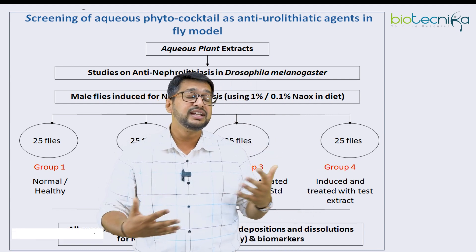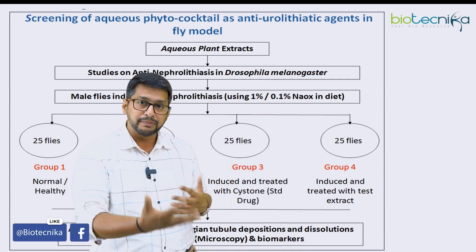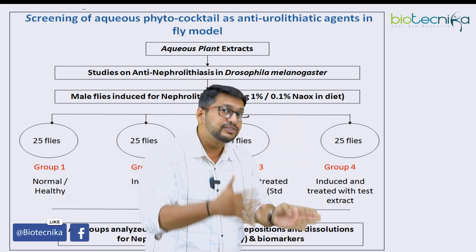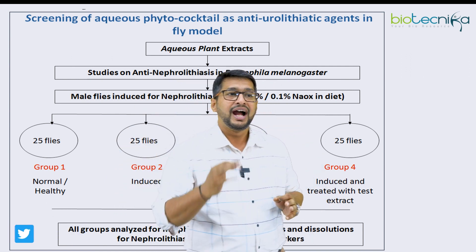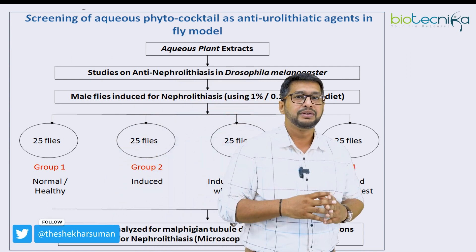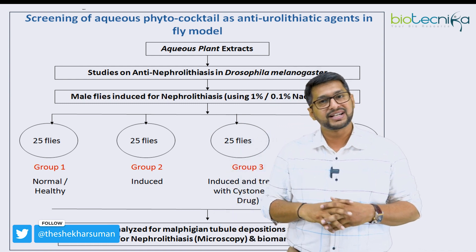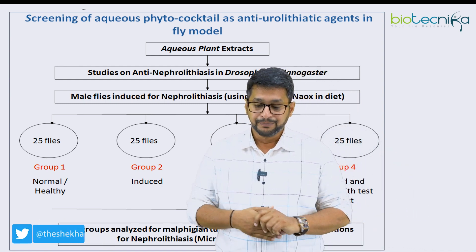Group 1 will contain only healthy flies. Group 2 will contain induced flies. Group 3 will contain induced but treated with your drug molecule — in this case a phytomolecule. And group 4 can include induced plus treated with a standard drug. Since phytochemicals are taken as an example, a drug from a phytochemical source would be used — one such example is Cystone, marketed under the Himalaya brand.